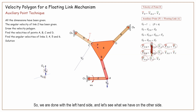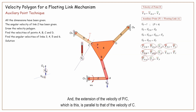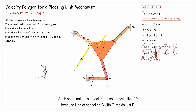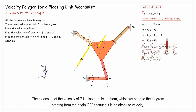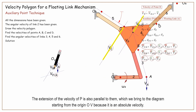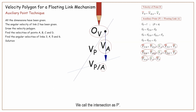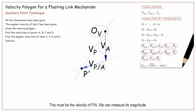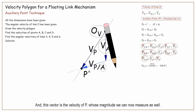So we are done with the left-hand side. On the other side, we have the extension of the velocity of C and the extension of the velocity of P with respect to C. Instead of two unknown magnitudes, we combine them into one unknown magnitude, which is the summation of the two. Such combination is in fact the absolute velocity of P. The extension of the velocity of P is brought to the diagram, starting from the origin OV, because it is an absolute velocity. We call the intersection as P prime. This must be the velocity of P with respect to A, and this vector is the velocity of P, whose magnitude we can now measure.